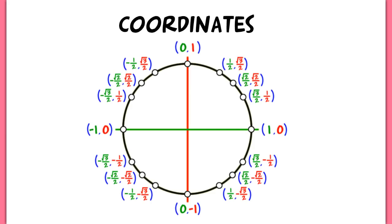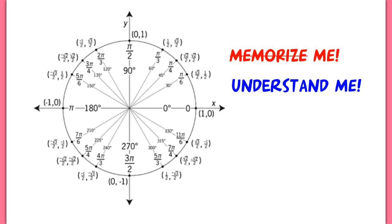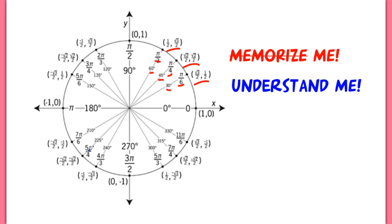We also have to know the corresponding coordinates for those angle inputs. For example, the sine of a 30-degree angle would be found by using the corresponding y-coordinate, which is 1/2. This is how we evaluate trig functions very quickly without a calculator — through understanding the unit circle. This is everything put together: both angle measures in radians and degrees, as well as the coordinates. It looks very difficult to memorize, which is why I'm saying don't memorize it. If you understand where these values come from, it's very easy to replicate and reproduce this unit circle.